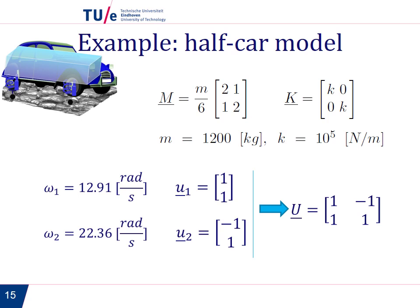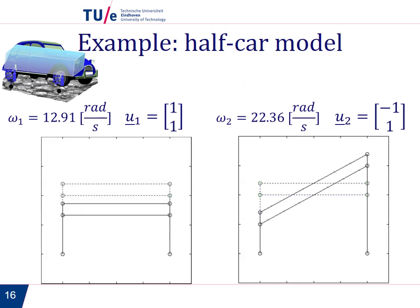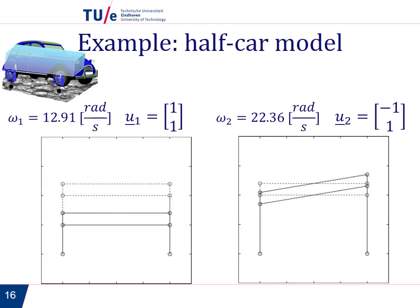How do these modes look like? For the first mode, we see that both ends of the mass have the same amplitude, so the vibration that corresponds to this mode is a vertical oscillation.